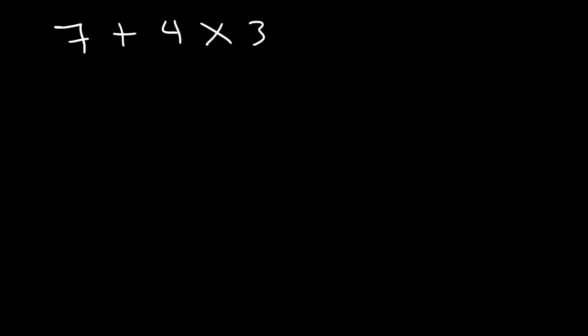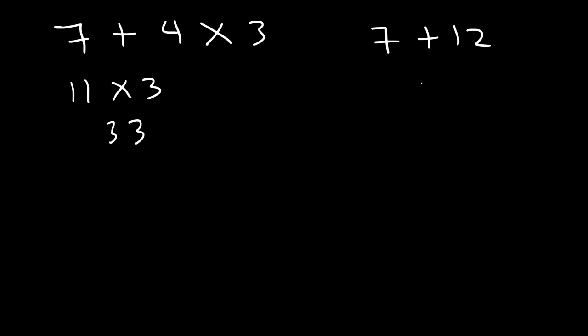What is 7 plus 4 times 3? Go ahead and evaluate that expression. There are two ways you might think of doing this: should we add before we multiply, or should we multiply before we add? If we add first, 7 plus 4 is 11, and 11 times 3 is 33. But if we multiply first, 4 times 3 is 12, and 7 plus 12 is 19.